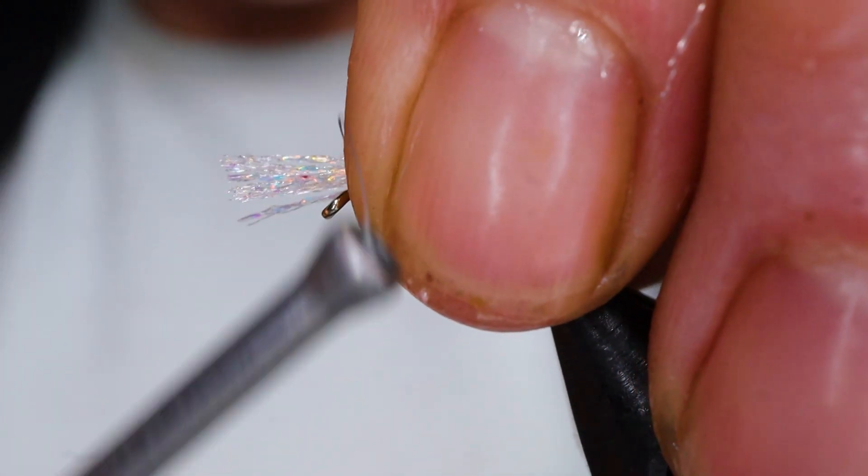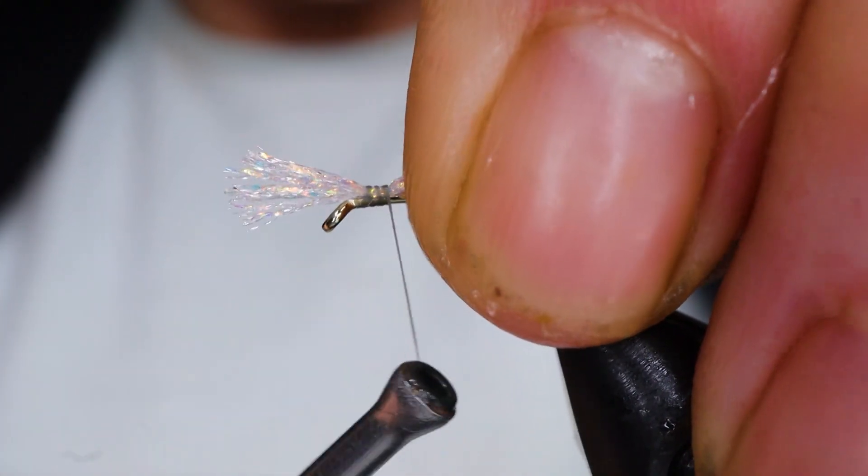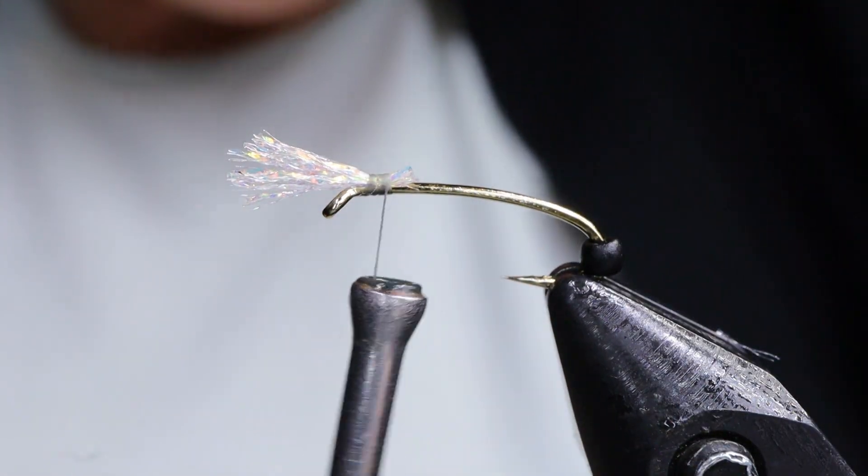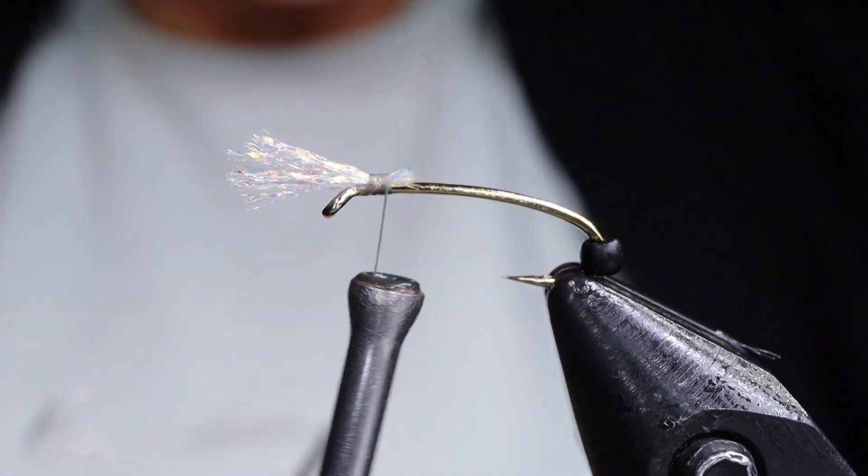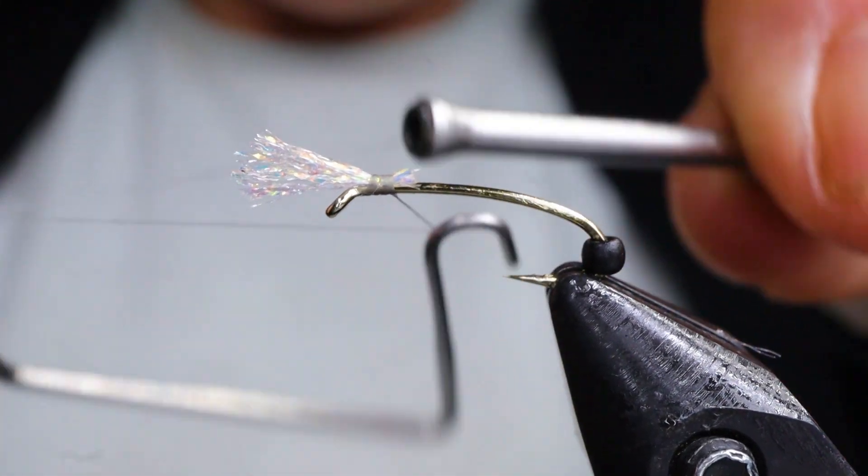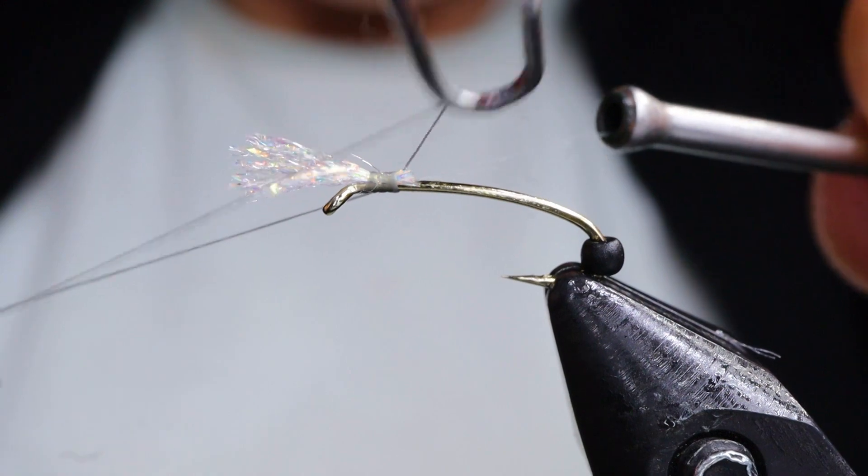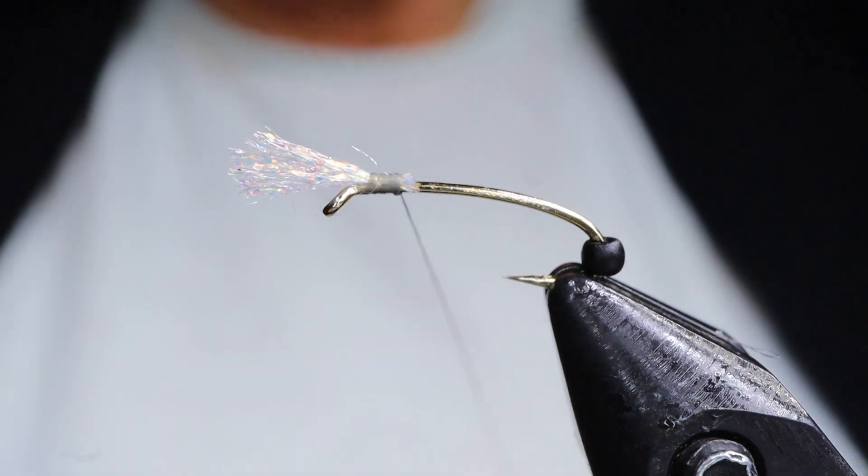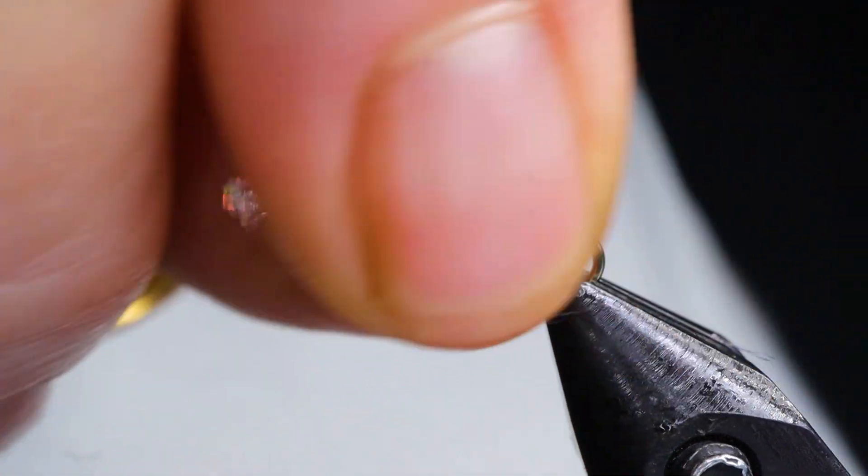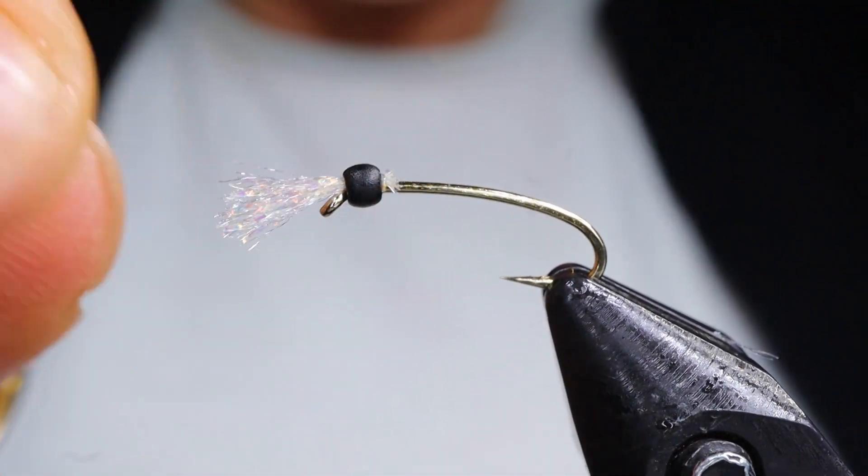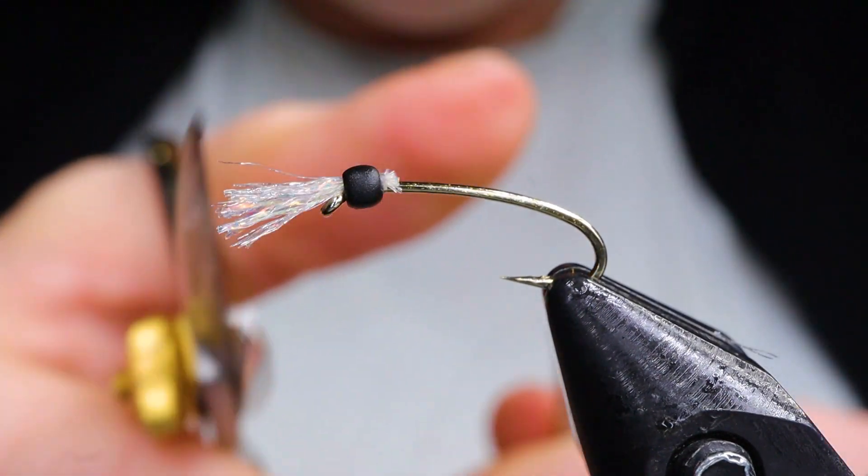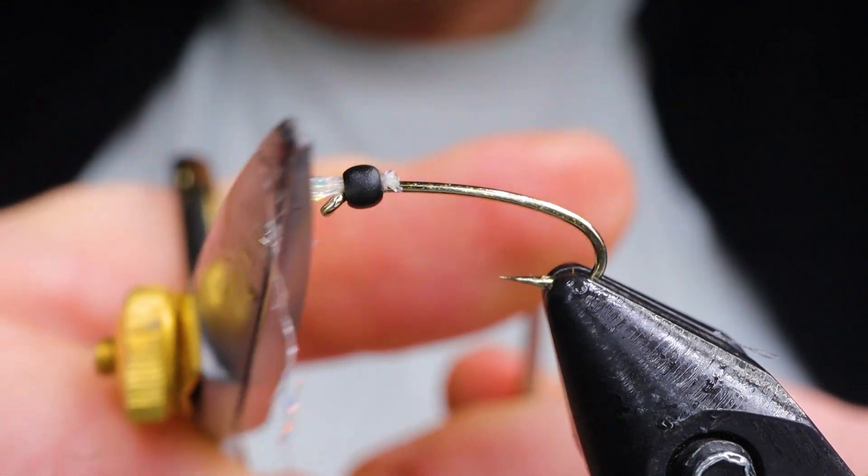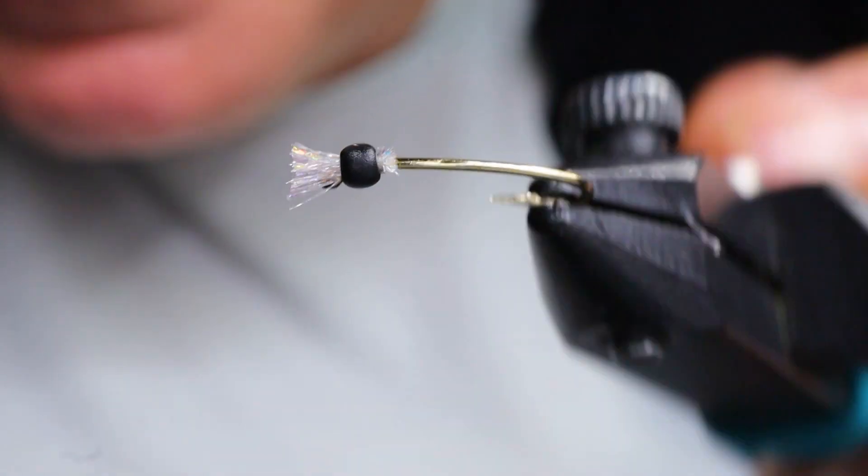I'm going to find eight strands to be about right for this size hook. I'm just going to attach. And now I'm going to trim this at an angle, very close. And just take my whip finisher. I'm going to whip finish over top of that little bump. Then you can snip away your thread. And then just slide your bead right over that gill right to the front. And then I like to trim my gills right away. So I just trim them sort of even with the front of the hook.